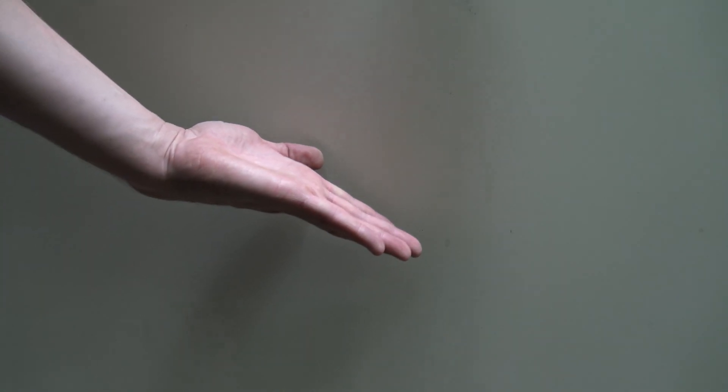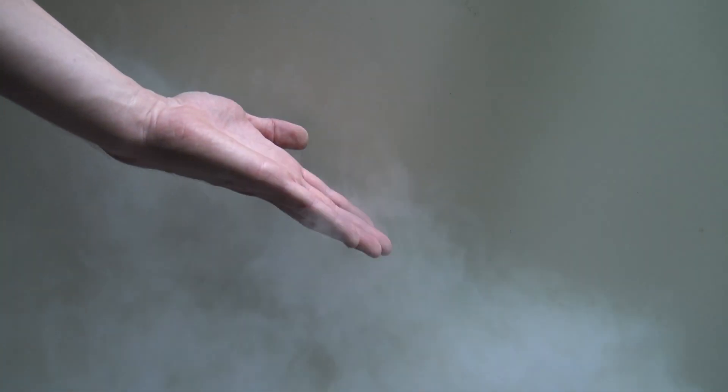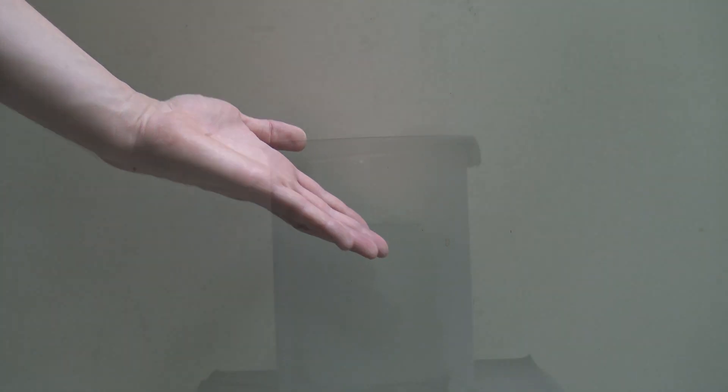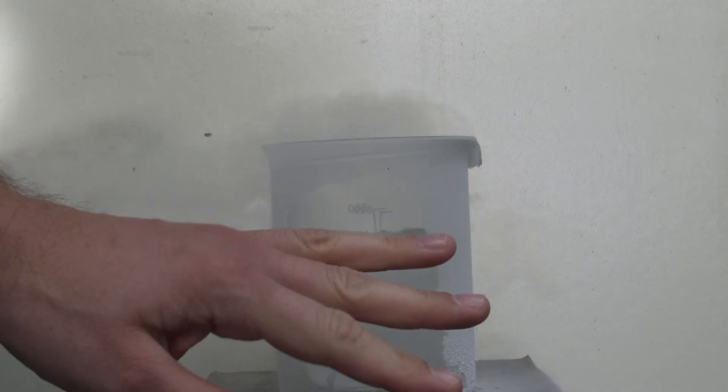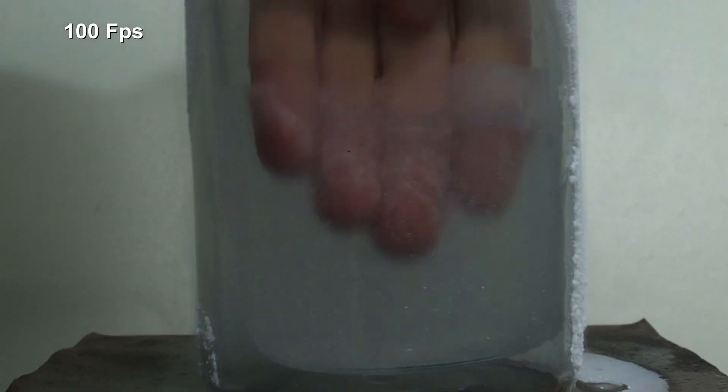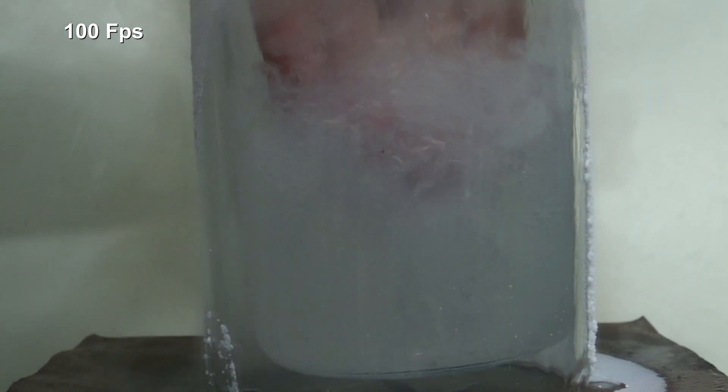That's the reason why a short contact with the skin usually doesn't cause any damage. In these slow motion shots the isolating layer can be observed quite well.